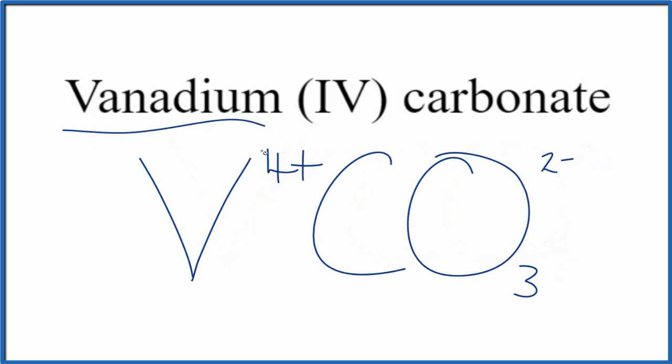Since vanadium is a transition metal and carbonate is a polyatomic ion, a group of nonmetals, we have an ionic compound. So these charges need to add up to zero. We need a net charge of zero.